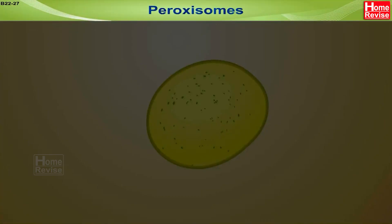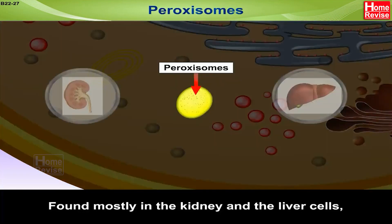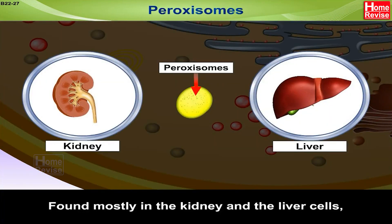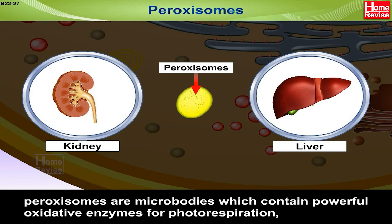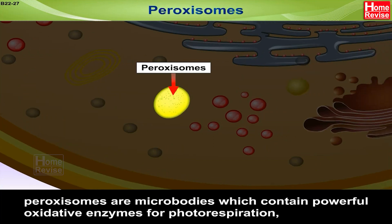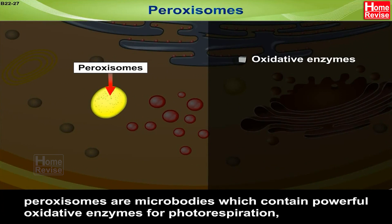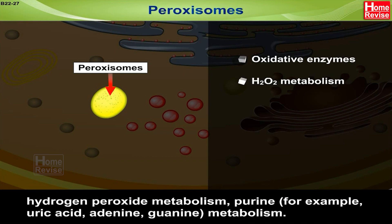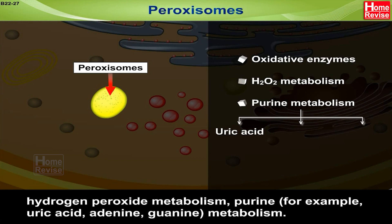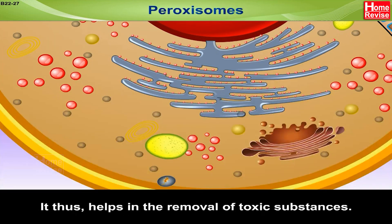Peroxisomes. Found mostly in the kidney and the liver cells, peroxisomes are microbodies which contain powerful oxidative enzymes for photorespiration, hydrogen peroxide metabolism, and purine metabolism — for example, uric acid, adenine, and guanine metabolism. It thus helps in the removal of toxic substances.